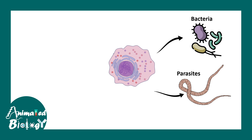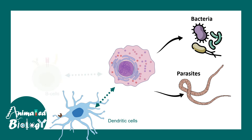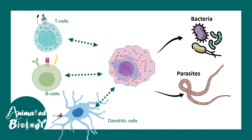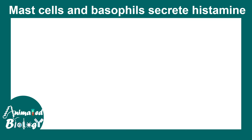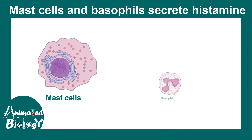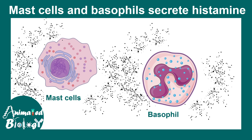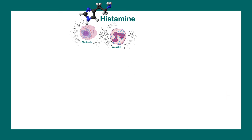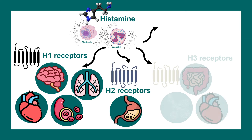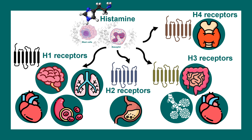Mast cells normally help fight bacterial and parasite infections, but sometimes they are hyper-responsive to allergens and interact with dendritic cells, B cells, and T cells in an abnormal fashion. Both mast cells and basophils secrete histamine, leading to all the changes during allergy. Histamine can bind to several categories of histamine receptors — H1, H2, H3, or H4 receptors — present in different organs, each producing different cellular outcomes. One prominent outcome is evoking inflammation.